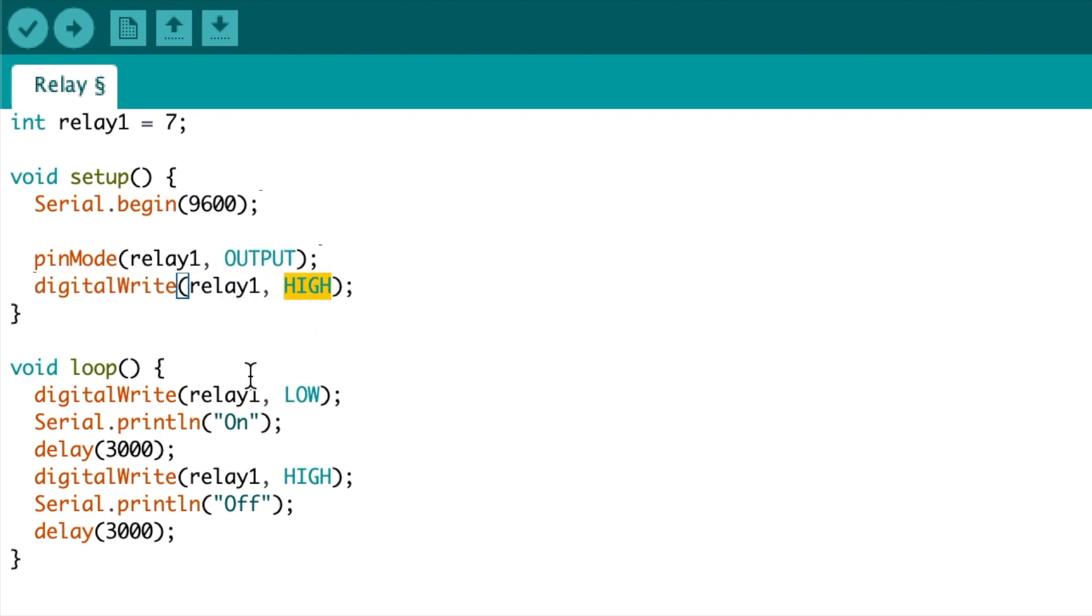Then in the loop, the pin output of relay1 is turned to low. The word on is printed in the serial monitor, and then the device is put to sleep for 3 seconds, or 3000 milliseconds. High is then written to relay1, the word off is printed to the serial monitor, and this is followed by another 3 second delay.